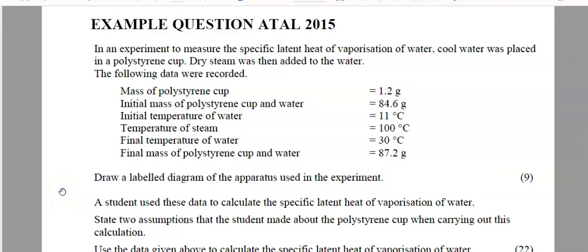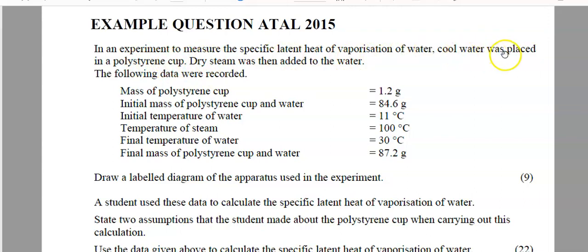Finally, we're going to take a look at a Leaving Cert question on this topic — question 2 from the 2015 Leaving Cert Honours paper. There's something very interesting in this question. Whereas when we normally do the experiment we use a copper calorimeter, in this question they do not. Instead, the cold water was placed in a polystyrene cup — one of those foam coffee cups we're all familiar with.